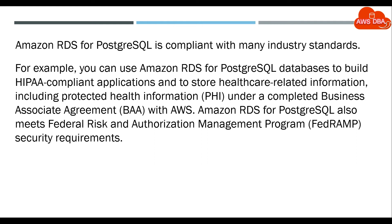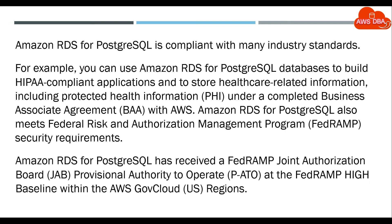Amazon RDS for PostgreSQL also meets Federal Risk and Authorization Management Program, FedRAMP, security requirements. Amazon RDS for PostgreSQL has received a FedRAMP Joint Authorization Board, JAB, provisional authority to operate, P-ATO, at the FedRAMP high baseline within the AWS GovCloud US regions.